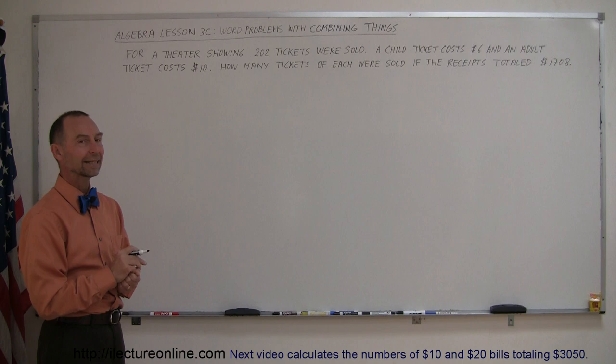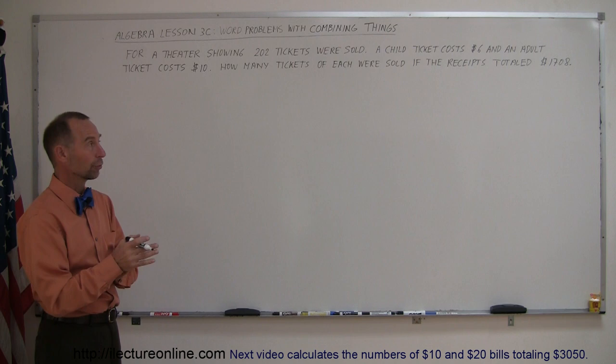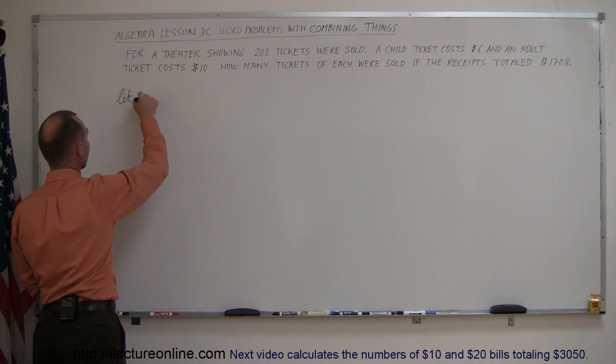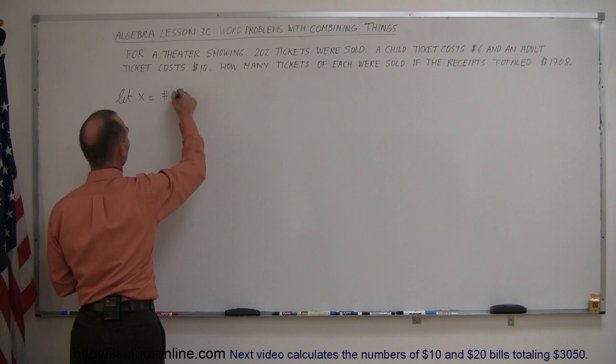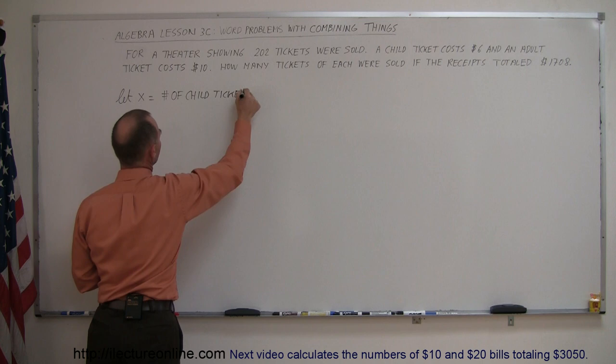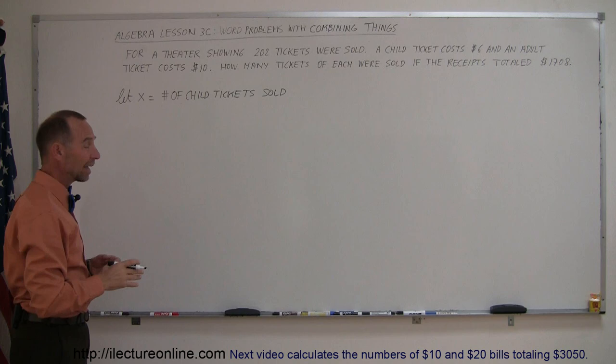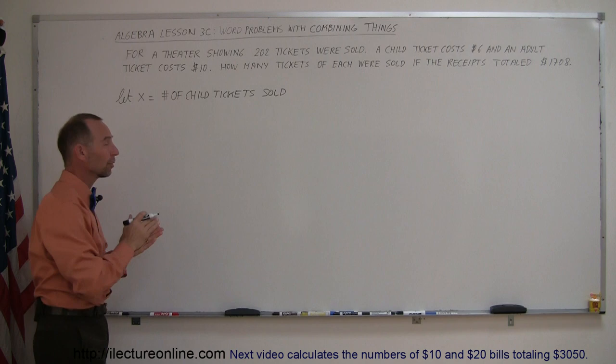Let's start out by defining the number of tickets sold for adults and number of tickets sold for children. Let X equal, we can pick either one, so let me say the number of child tickets sold. It actually makes a lot of sense to be very definitive about what X represents. It's the number of children tickets or child tickets sold.